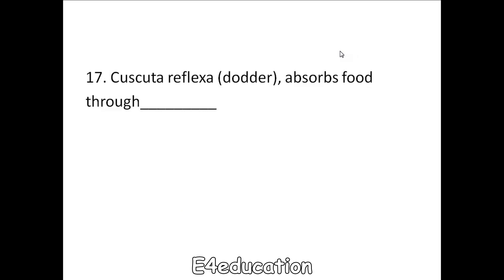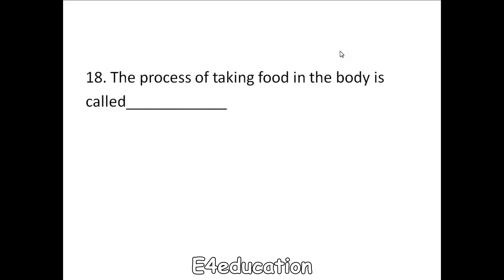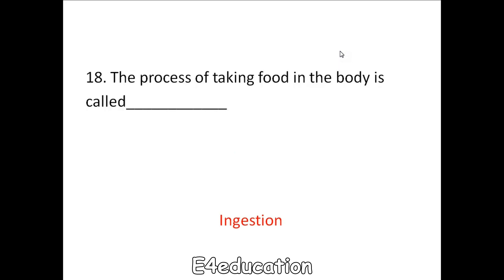Cuscuta, also called the dodder plant, absorbs food through haustoria. The process of taking food into the body is called ingestion.